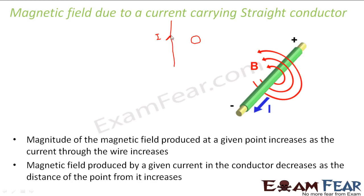The amount of current was varied. When the amount of current increased, the deflection also increased. When the amount of current was decreased, the deflection also decreased. This showed that the deflection is proportional to the amount of current. This deflection is a result of the magnetic field, because the compass always deflects only in the presence of a magnetic field. So magnetic field B was directly proportional to the current flowing through the conductor.